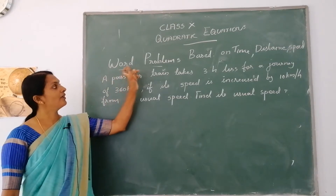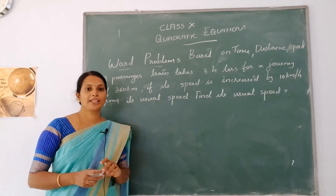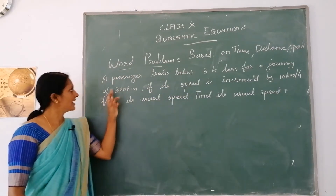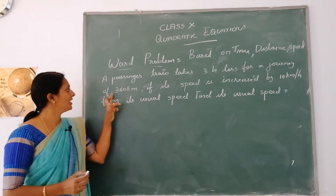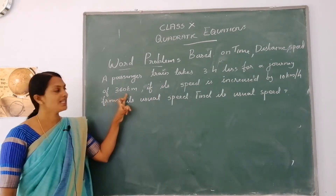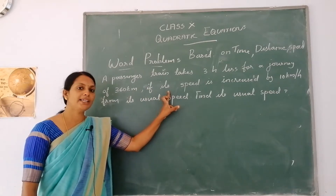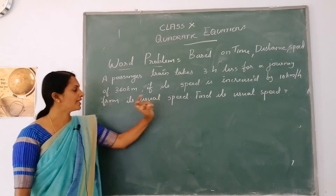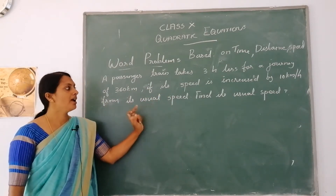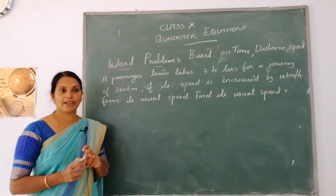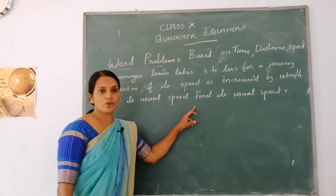Next topic is word problem based on time, distance, speed. A passenger train takes 3 hours less for a journey of 360 km, if its speed is increased by 10 km per hour from its usual speed. Find its usual speed. Here we have to find the usual speed.